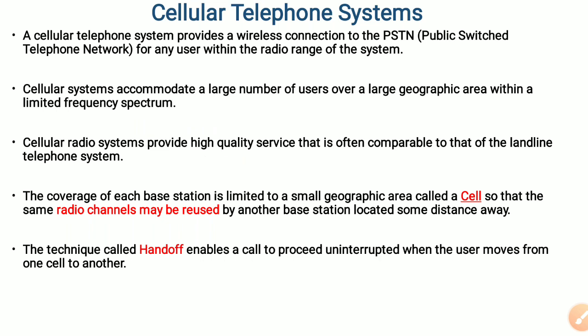The coverage of each base station is limited to a small geographical area. The geographical area within a cellular system can be classified into different smaller sections known as a cell. Cell is the smallest geographical area within a mobile communication. Because of dividing a geographical area into small cells, the same frequency or the same radio channels may be reused by another base station located at some distance away.